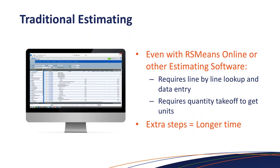Just like everybody else in the digital world, RSMeans data — known for years as the construction cost engineering Bible — has evolved into the digital age with RSMeans Online. But even there, you have to build your total cost by line-by-line lookup or data entry. It still requires a quantity takeoff to get to the unit. Whether it's a material takeoff, CIP budgeting, a main break, or deciding if something comes out of OPEX or CAPEX — all of that has to be built up and it takes time. Even though digital, it's still extra steps and longer time.